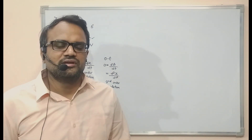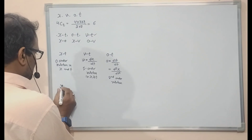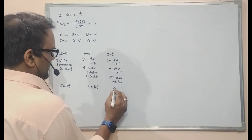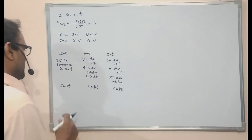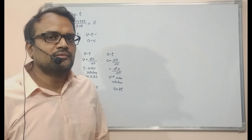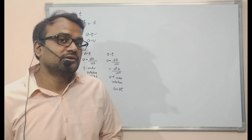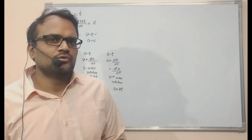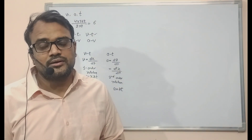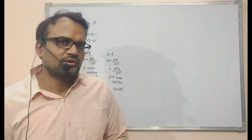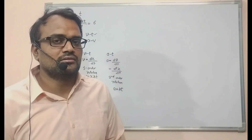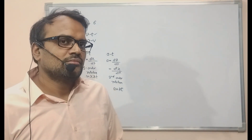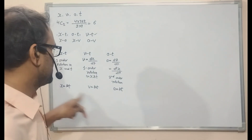Let's take examples for each relation. We take x = kt, v = kt, and a = kt, where k is a constant and t is the time. I have taken a linear function of time t, but it is not necessary — you can take any function: higher powers of t, trigonometric functions, logarithmic functions, exponential functions, and so on. For now let's stick to this linear function.